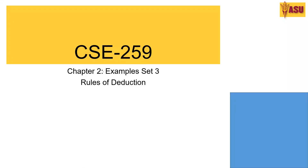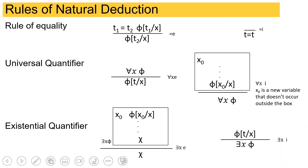Hello and welcome to another set of examples for chapter 2, predicate logic, CSE 259. In this we will look at the rules of natural deduction for predicate logic. We had rules of natural deduction for propositional logic — for conjunction, disjunction, and implication — and those will be required for this chapter as well. In addition, we have a few more rules based on the quantifiers. Let's have a quick recap of the rules for quantifiers.